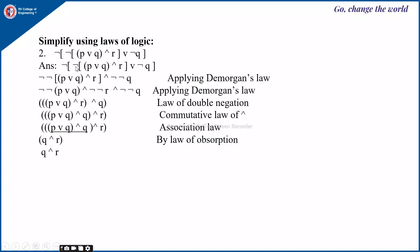Applying De Morgan's law, the negation goes inside: ¬¬(P∨Q) ∧ R becomes ¬(¬(P∨Q)) and ¬¬Q. Applying De Morgan's law again gives ¬¬¬P∨Q ∧ ¬¬R ∧ ¬¬Q. Now applying the law of double negation to each expression, we get (P∨Q) ∧ R ∧ Q. Using the commutative law, we can rearrange R and Q.